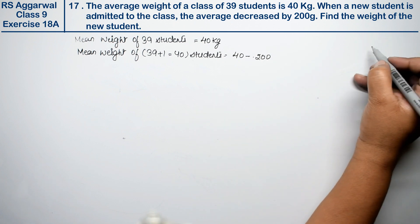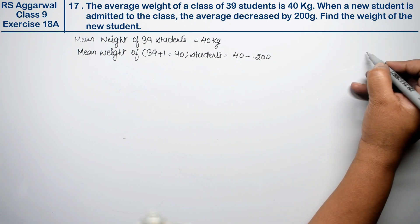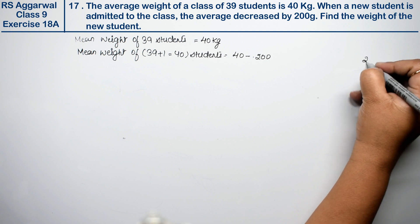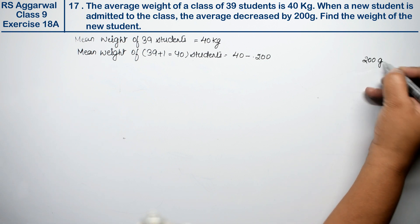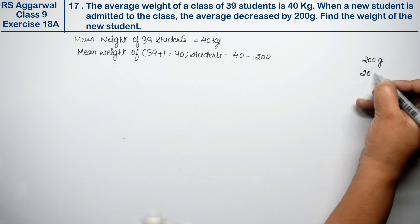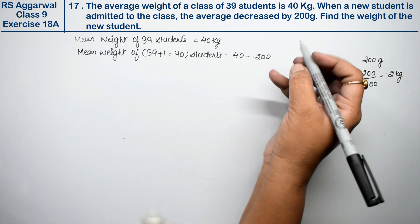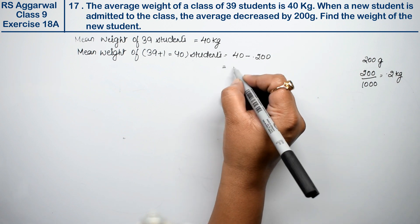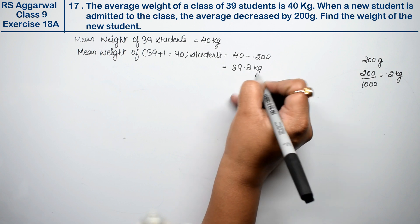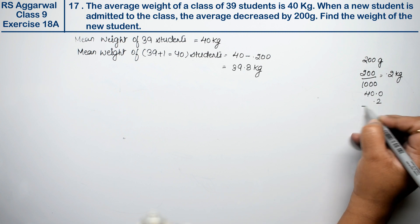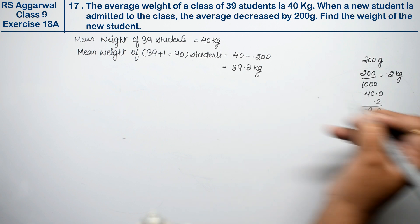You can write this 0.200 or 0.2, it's the same thing. It was 200 grams, we divided by 1000 to convert to kg, so this becomes 0.2 kg. So what did this become? See here, it will be 39.8 kg. How did we get this? From 40 minus 0.2 equals 39.8.